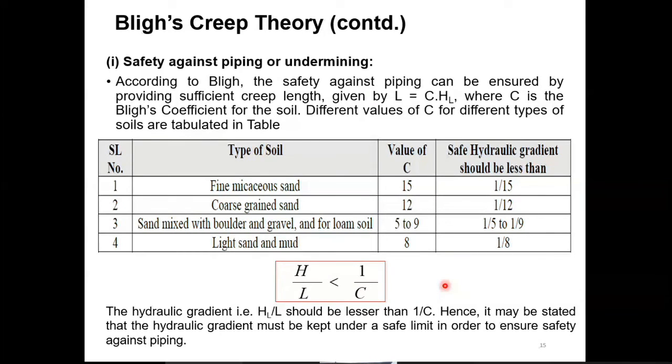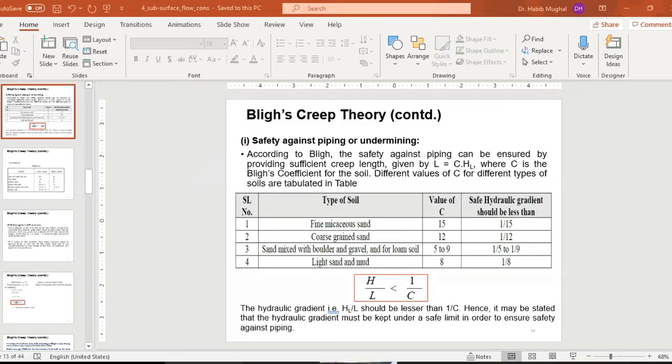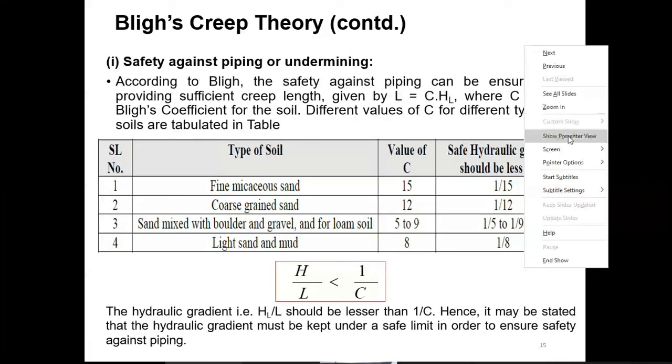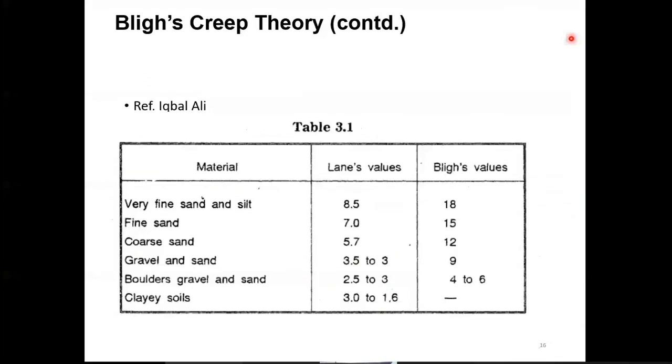The criteria is this one: the hydraulic gradient should be less than the safe hydraulic gradient prescribed by Blythe. So this H over L should be less than one over C. Okay, this is the criteria given by Blythe now.